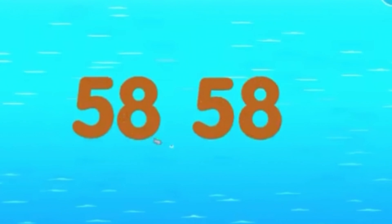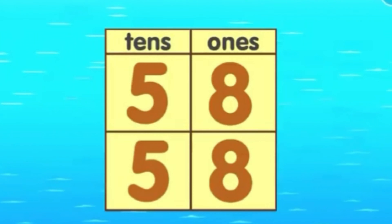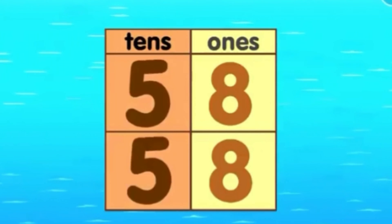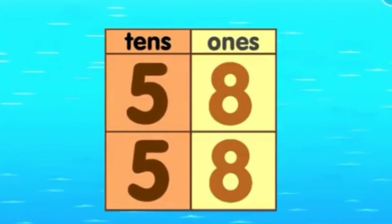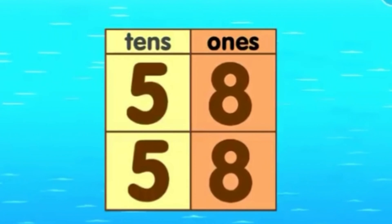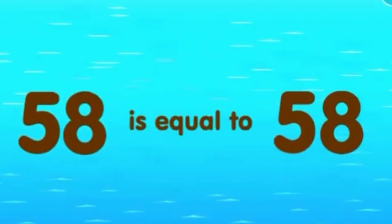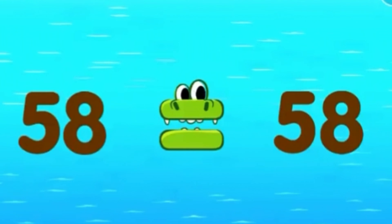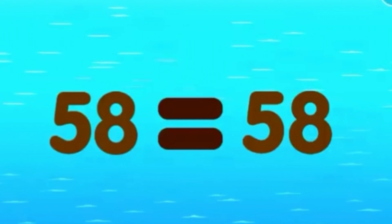Now let's see another example. Can you compare these two numbers? When comparing the tens, we find that they are the same — 5 and 5. Now look at the ones. The ones are also the same — 8 and 8. Thus, we can say that 58 is equal to 58. The alligator does not know which number to eat, so his mouth looks like this. It means that 58 is equal to 58.